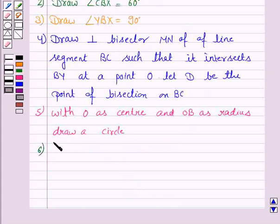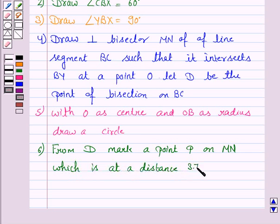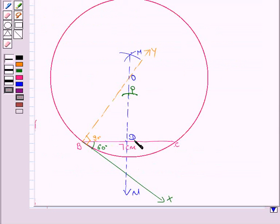Now the next step is from D, mark a point P on MN which is at a distance 3.7 cm. Since we want to have the altitude to be 3.7 cm, we have taken this point such that it is 3.7 cm from D.